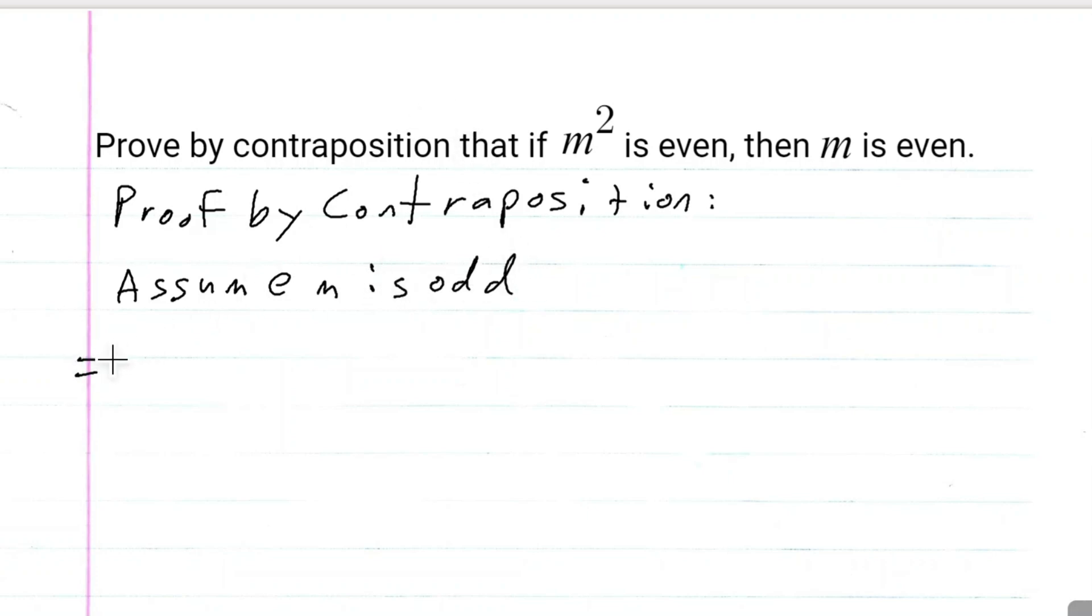We are going to assume m is odd. So if m is odd, this implies that m equals 2k plus 1, where k is an integer.